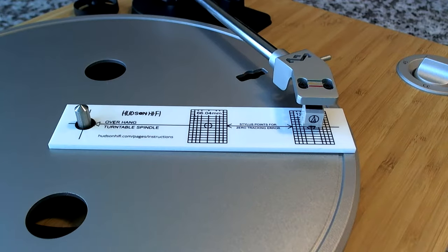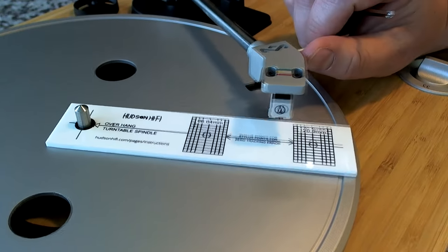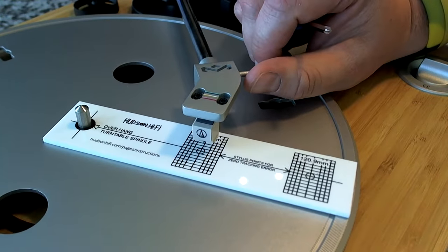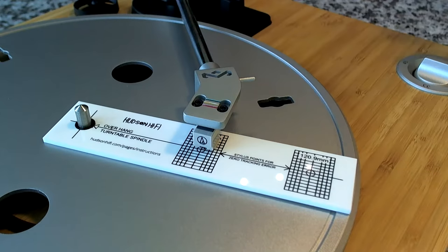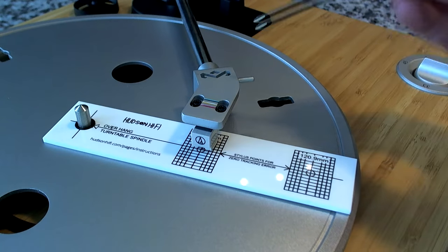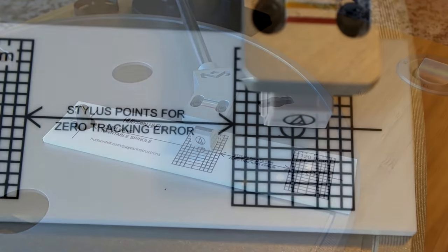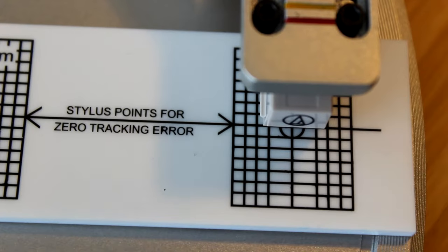Now if everything lines up properly in this first grid then simply lift the stylus and rotate the record forward a little bit and then place it on the next one. Now again if everything lines up then you're done. Your cartridge is aligned properly and you can move on. If not then you can use a small screwdriver like this one and just make adjustments to the screws in the top of the head shell assembly until that alignment is done properly.